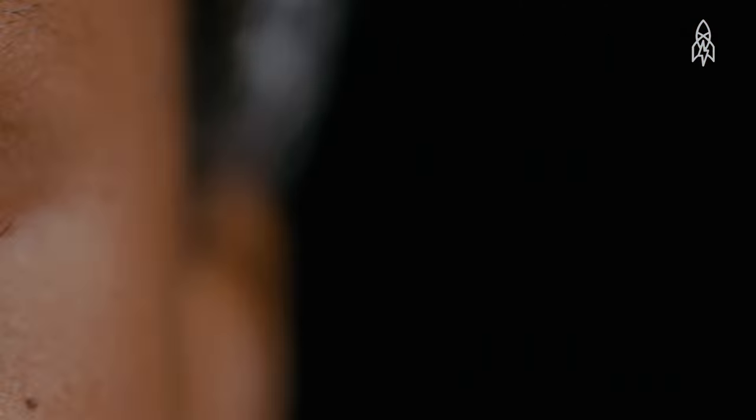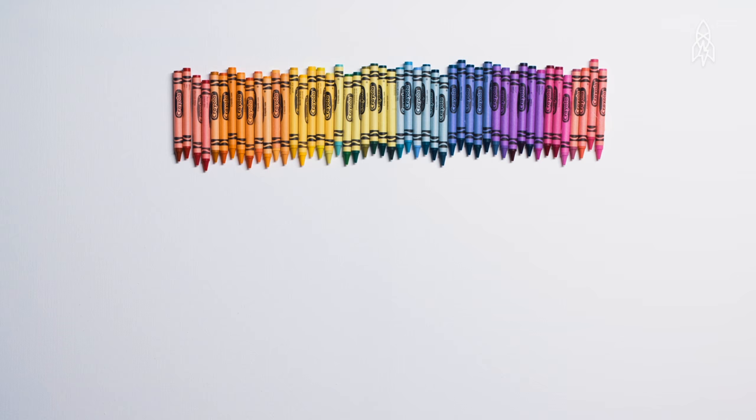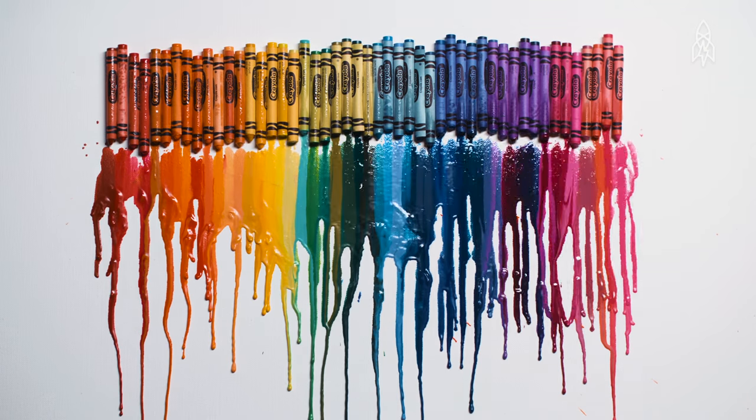Tetrachromacy is the presence of a fourth cone class in your retina. If I keep naming my invisible colors, maybe I'll have my own Crayola box one day.